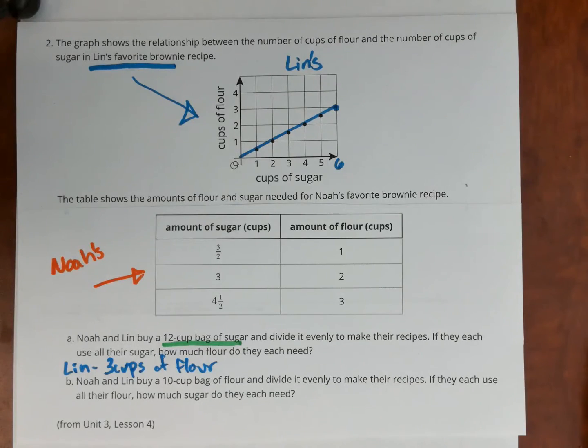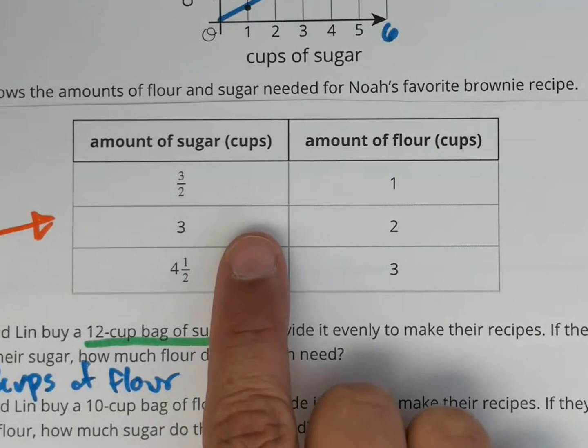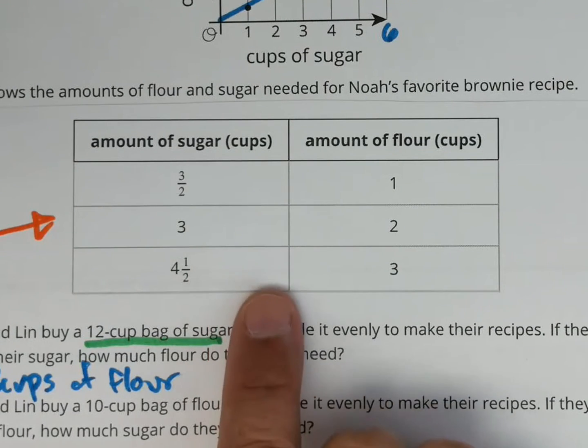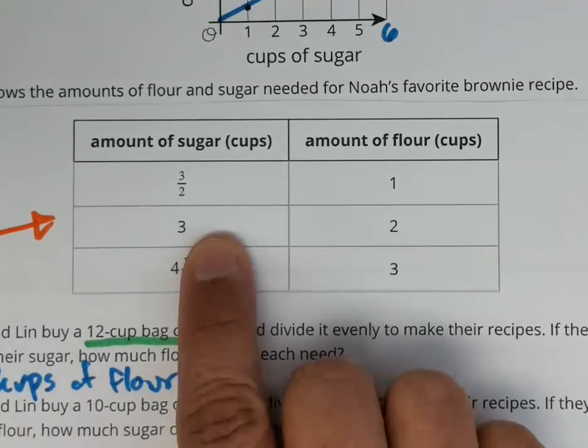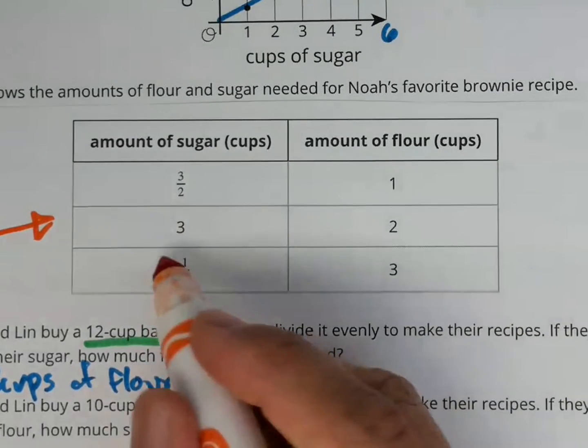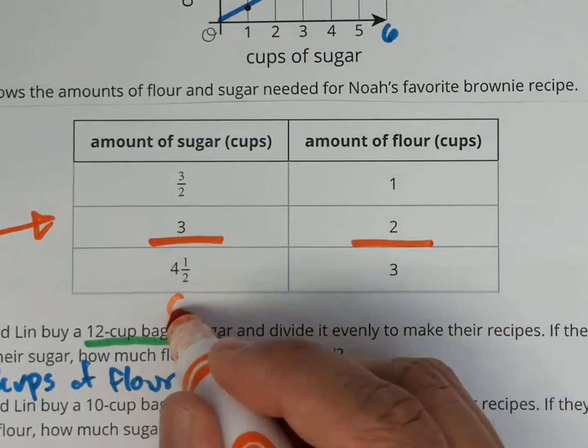For Noah, we're going to do that a different way because you have a table here for Noah. Now for the amount of cups in sugar, because this is proportional, I can multiply, I can double and triple. Now I can do it two different ways. I have this one right here, three cups of sugar. If I double it, because this is proportional, I can add a row here for six.